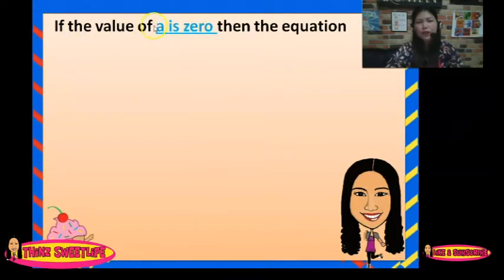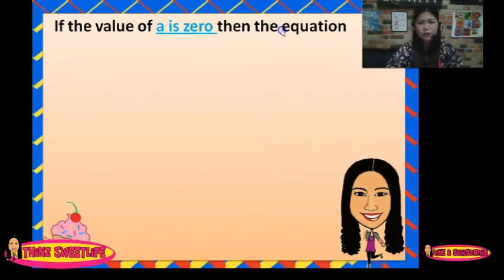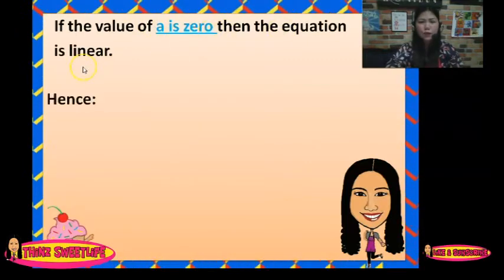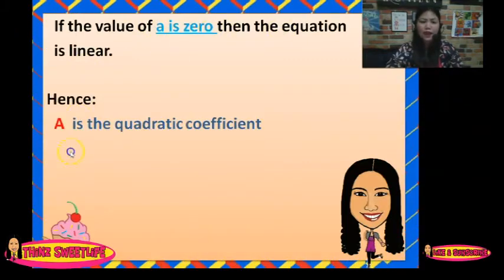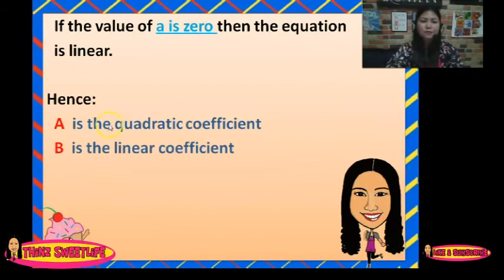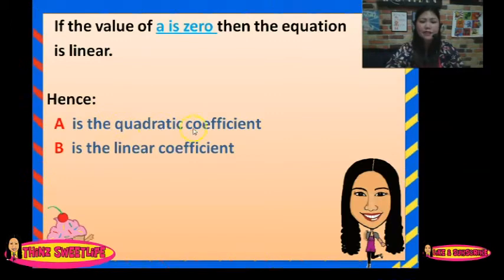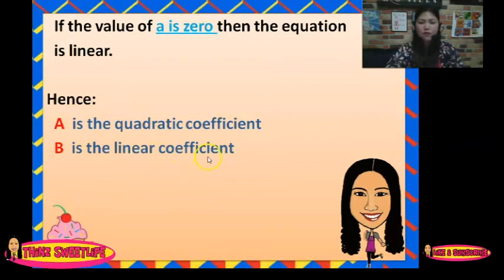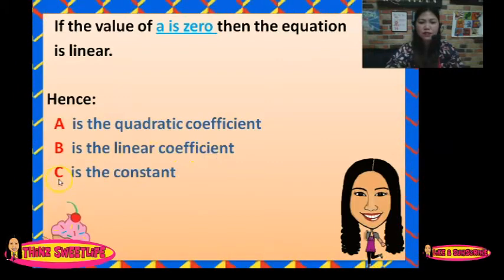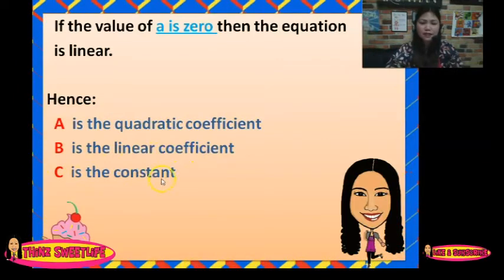If the value of A is 0, then the equation is linear. Hence, A is the quadratic coefficient, B is the linear coefficient, and C is the constant.